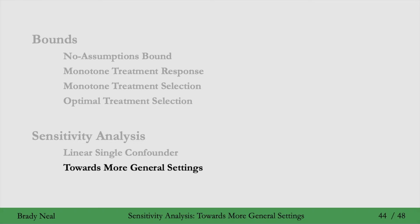However, it is still a simple linear setting. For example, we might like that T is not a linear function of W and U, and that Y is not a linear function of W and U. Rather, they could be much more complex functional forms.